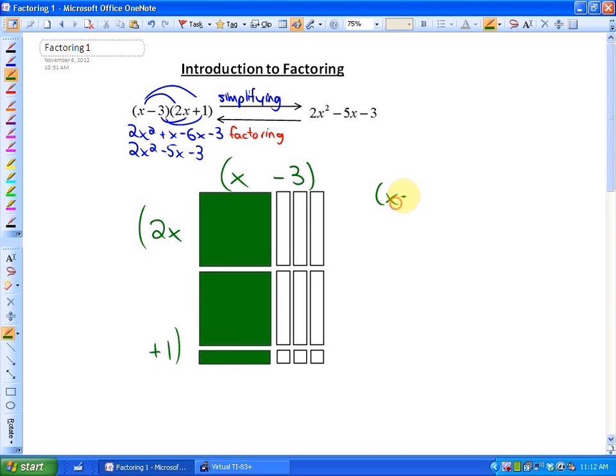Or in other words, x minus 3 times 2x plus 1. As you can see, that is 2x squared minus 5x minus 3 if you look at what we have here.